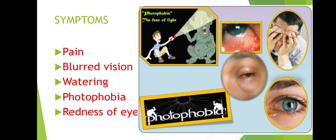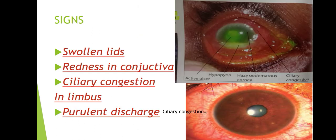Symptoms: Pain — due to exposure of nerve endings or stimulation of corneal nerves, spasm of the ciliary body, and increased intraocular pressure. Blurred vision is due to edema and ulceration. Watering is due to reflex lacrimation. Photophobia is increased sensitivity to light. Redness of the eye is due to congestion of blood vessels.